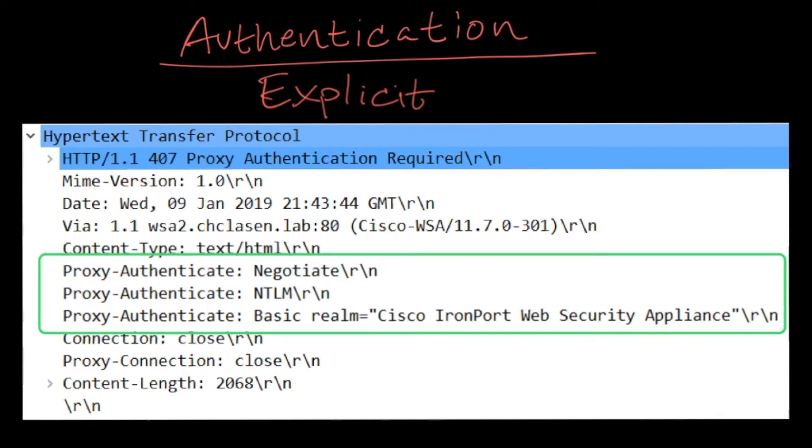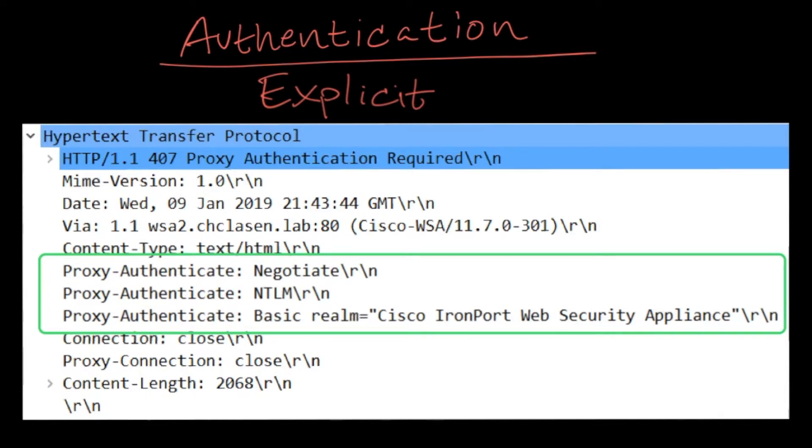In this example, it will show that Bob is allowed to authenticate using Kerberos, which is mentioned as negotiate, or NTLM, or basic. Bob's machine will now send another GET request, but this time it will include authentication information. The authentication exchange will proceed according to whichever authentication protocol is chosen. For example, for NTLM, we'll see a challenge and response process.